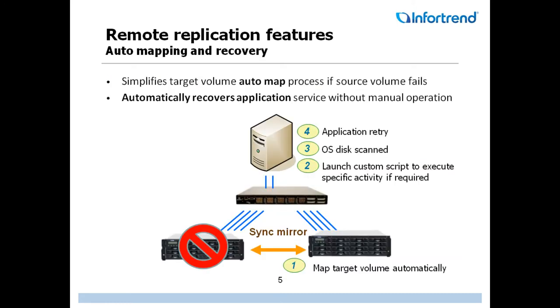Now let's look at auto mapping and recovery. As you can see in the illustration below, should the source volume fail, the application service automatically recovers and maps to the target volume without manual operation.